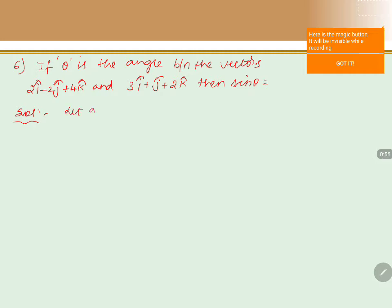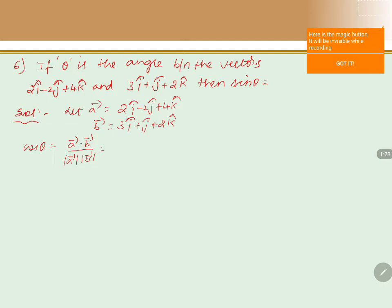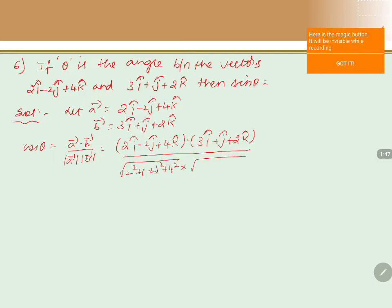First, we will assume that a vector is 2i cap minus 2j cap plus 4k cap, while b vector is 3i cap plus j cap plus 2k cap. Now, first we will calculate cos theta. The formula is a vector dot b vector divided by magnitude of a into magnitude of b. The magnitude of a is square root of 2 squared plus minus 2 squared plus 4 squared, and magnitude of b is square root of 3 squared plus 1 squared plus 2 squared.